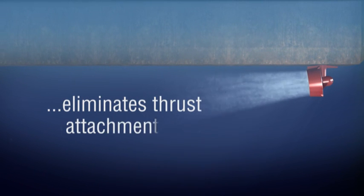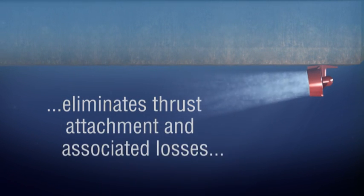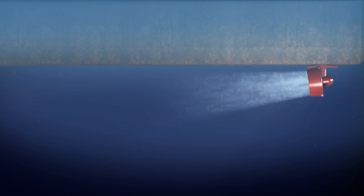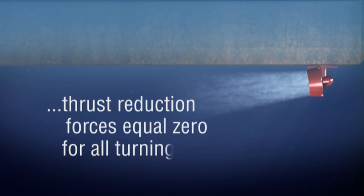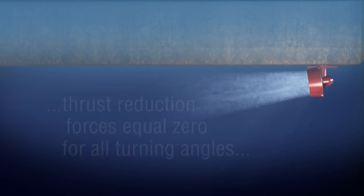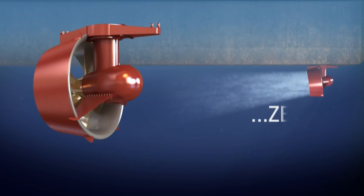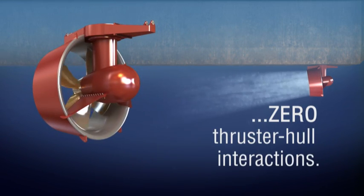Eliminating thrust attachment and associated losses. In fact, studies have shown that at 7 degrees, thrust reduction forces are equal to zero for all investigated turning angles. This means zero thruster-hull interactions are present with the FlowServe Ploiga design.